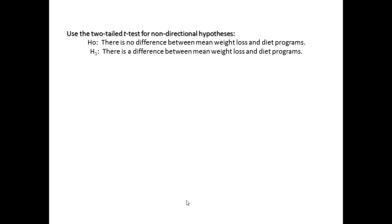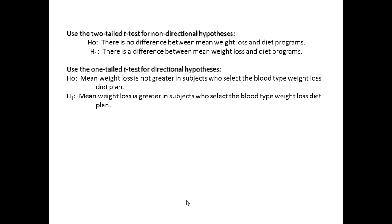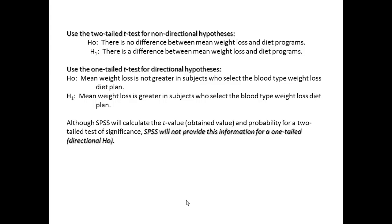Whenever we have a directional hypothesis, we use a one-tailed test to test the null. When we have a non-directional hypothesis, we use a two-tail test. The same is true with the t-test. We use a two-tailed t-test for a non-directional hypothesis — for example, if we wanted to know if there was a difference in mean weight loss between two diet programs. We could also write a directional hypothesis, such as mean weight loss being greater in subjects who selected one type of diet over another. However, SPSS will not test a directional hypothesis. It will generate the t-value and the probability for the two-tail test. If you wanted to test a directional hypothesis, you would take that t-value from SPSS and look up the value in the table in the back of the book needed to reject the null.